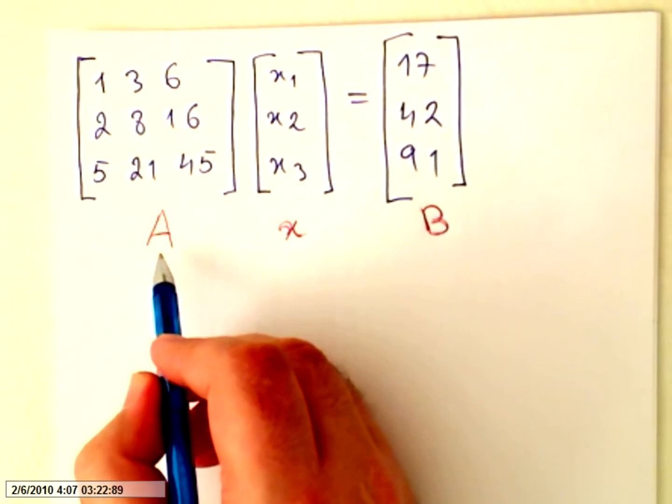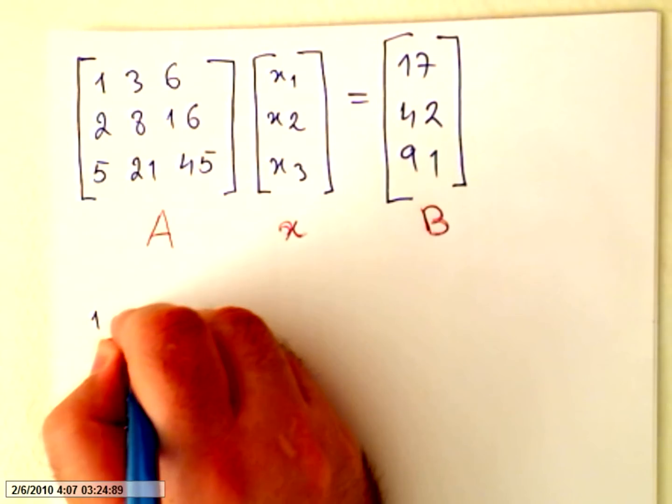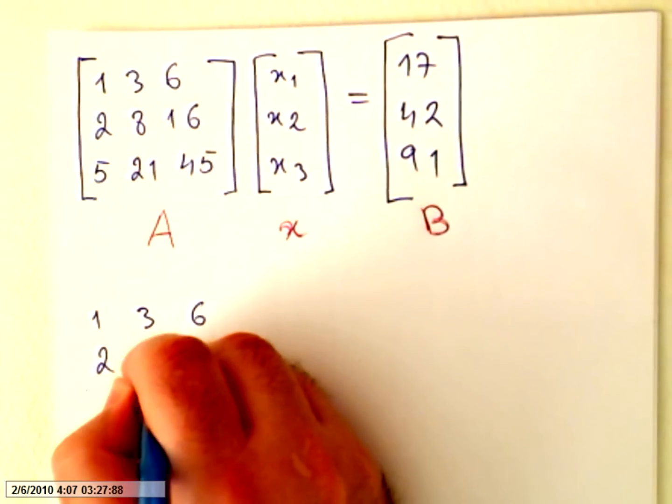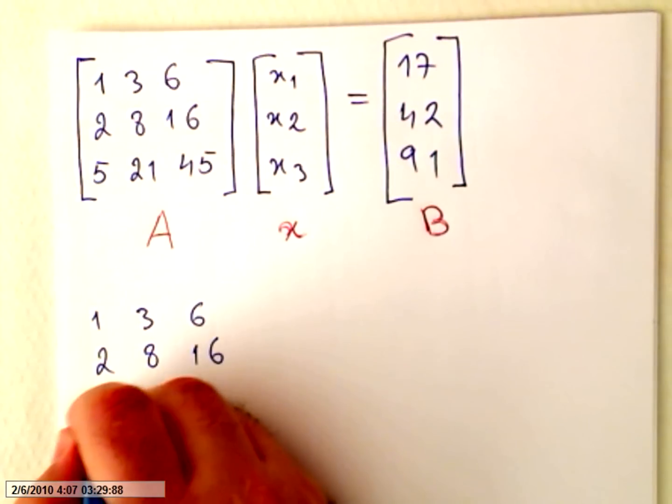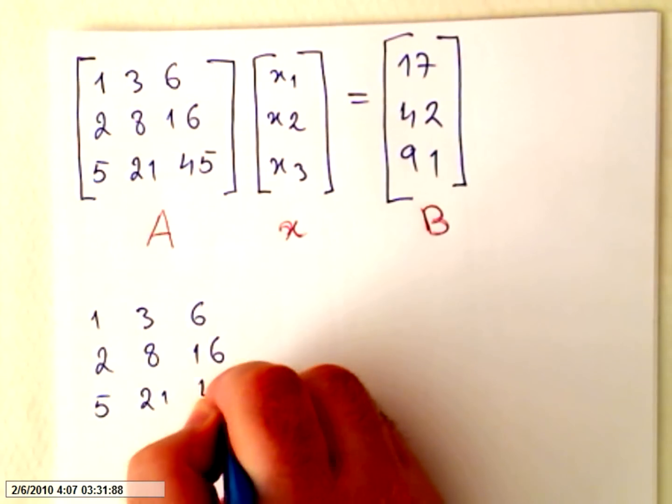Matrix A, meaning 1, 3, 6, 2, 8, and 16, 5, 21, and 45.